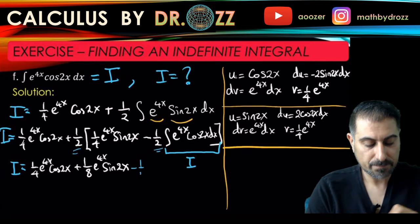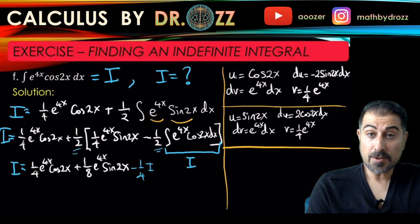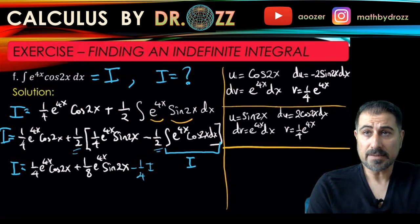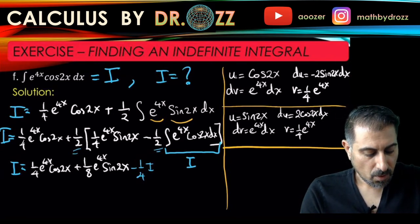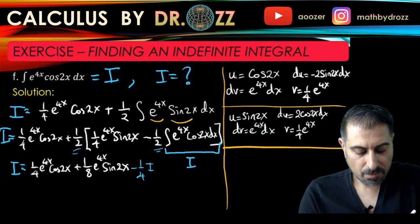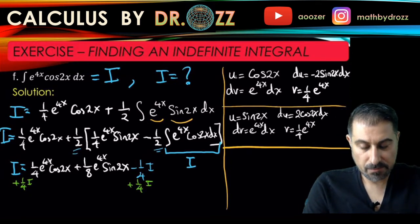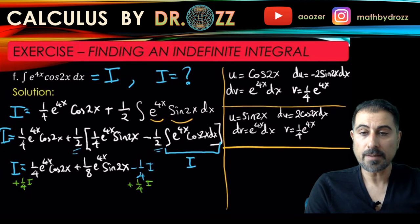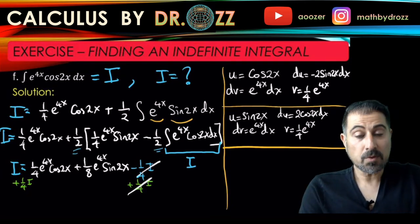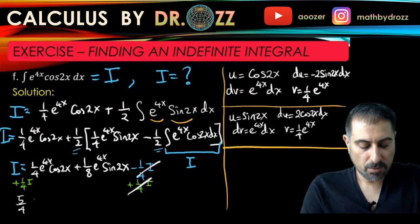This is me expanding everything out. I need to know what I is, so that means I'm going to add one-fourth I to both sides of the equation here. This way I have - let me use just white color from this moment on - these guys are going to cancel obviously, but on the right I have one I plus one-fourth I, which is five-quarters of I, is equal to one-fourth e to the 4x cosine 2x and one-eighth e to the 4x sine 2x.